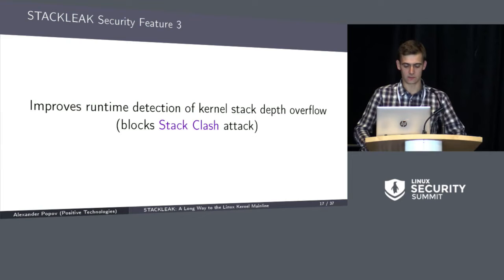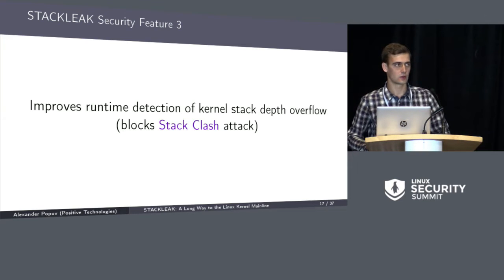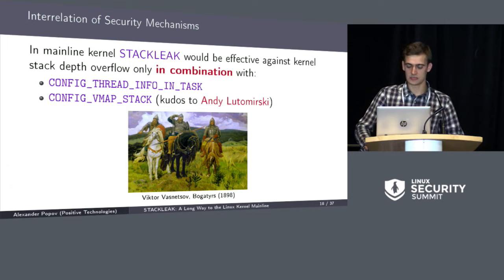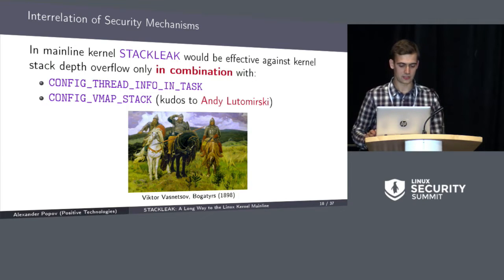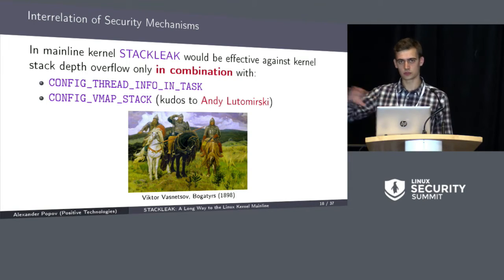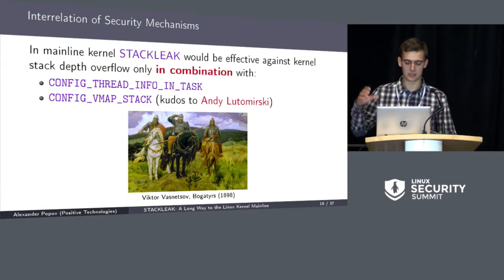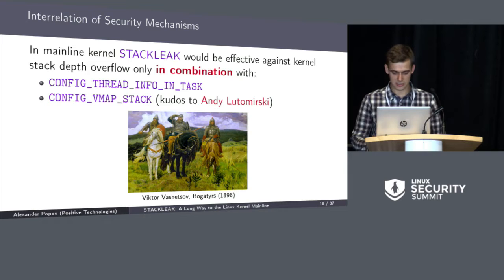Now the third security feature: StackLeak blocks the stack clash attack, which is one kind of stack depth overflow. If we want the mainline kernel to be defended against all kinds of stack depth overflow we know right now, we need three config options altogether: CONFIG_THREAD_INFO_IN_TASK, which moves thread info out of the bottom of the kernel thread stack; CONFIG_VMAP_STACK, which adds guard pages around our stack; and finally StackLeak, which blocks the stack clash attack.